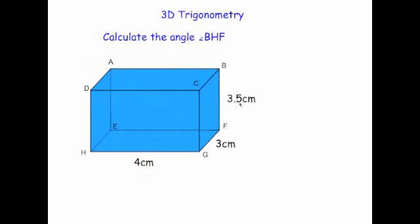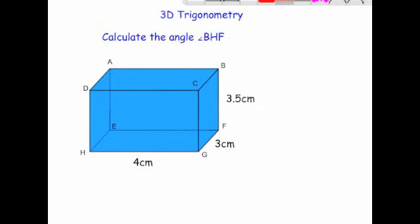The question asks us to work out the angle BHF. So first of all, let's trace that angle. B is here, H is down here, F is there. So what I'm actually going to do is just draw those lines in pencil. So B to H would be that diagonal, for example from the top corner of the room you're in to the opposite bottom corner, and then from H across to F.